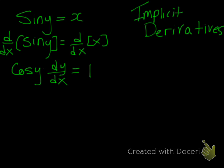So like I told you guys in class, we can easily rewrite that dy over dx as y prime. So cos y times y prime is equal to 1.